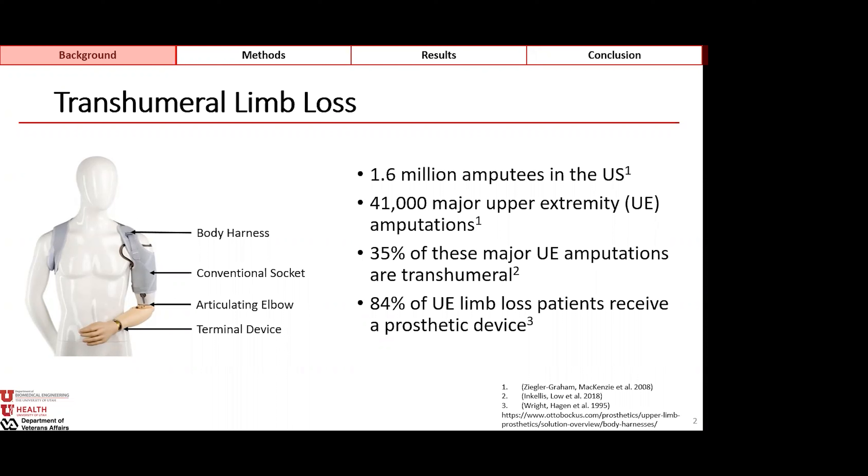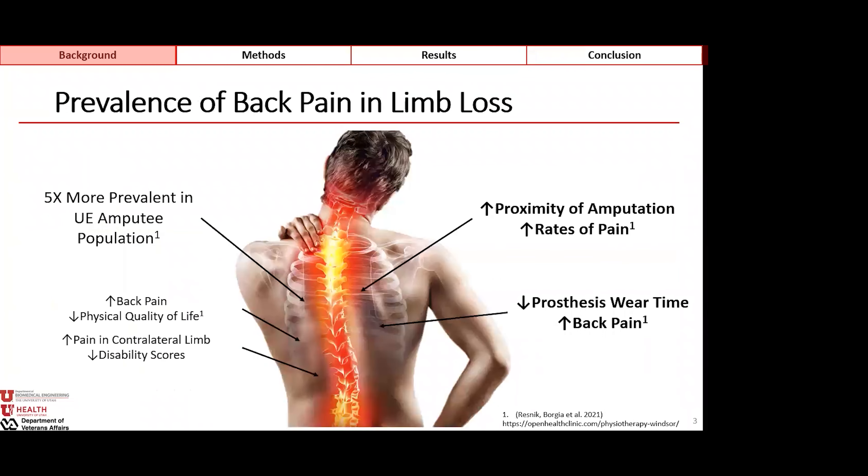One of the issues that this population faces that really affects their quality of life is the prevalence of back pain in upper extremity amputees. This population experiences chronic back pain at a rate five times higher than the general population, and this directly impacts their physical quality of life and their ability to complete occupational tasks. Proximity of amputation is directly correlated with the rate of reported chronic pain, and prosthesis wear time is inversely related with the severity of the back pain.